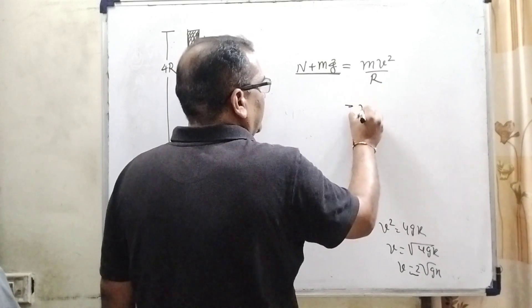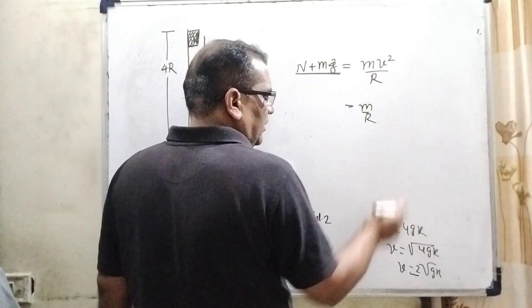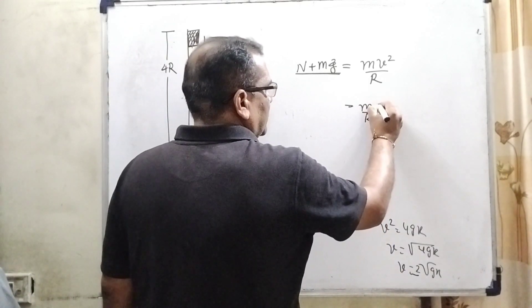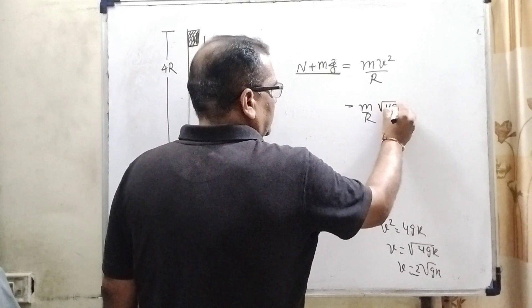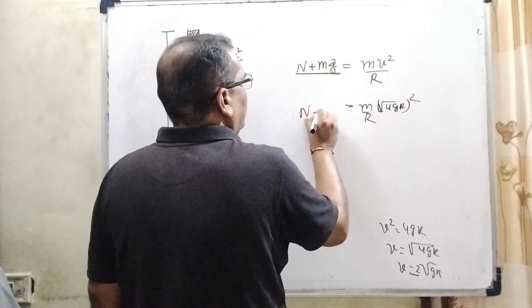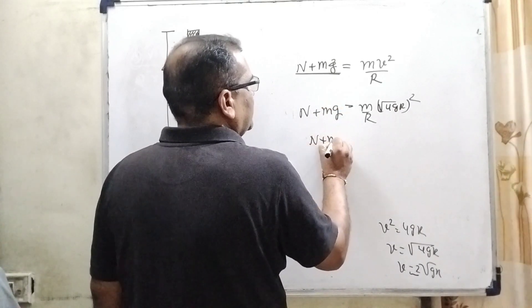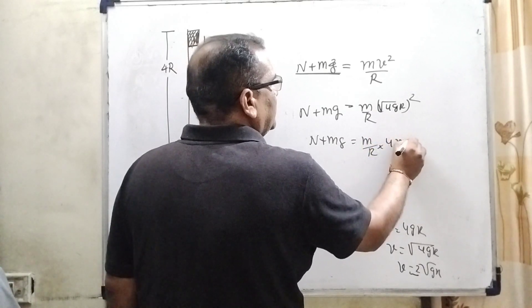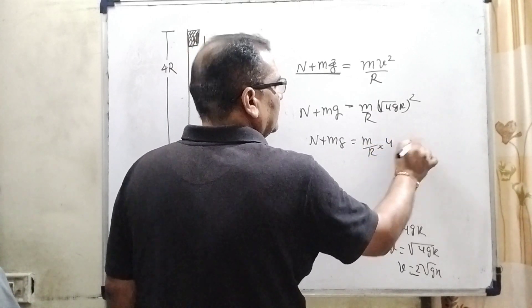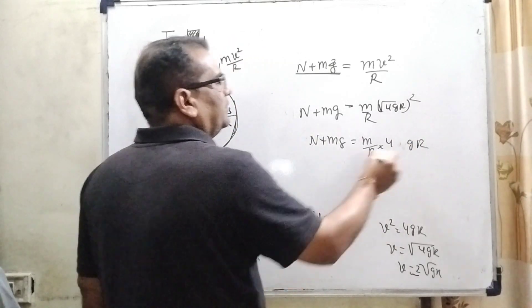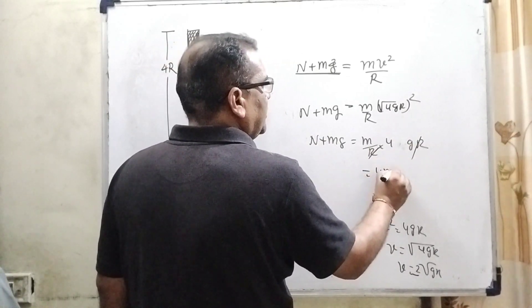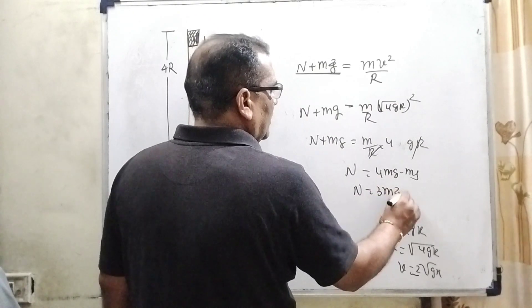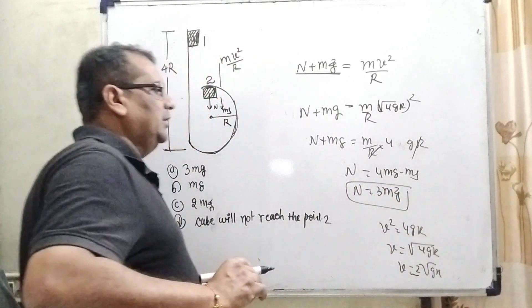Now, substitute the value of here v. What is the value of v? Direct we have to substitute root 4gR and it is square. n plus mg. n plus mg equal to mR and 4gR. So, here R R cancel out 4mg minus mg equal to, here the normal force. So, here normal force we get 3mg.